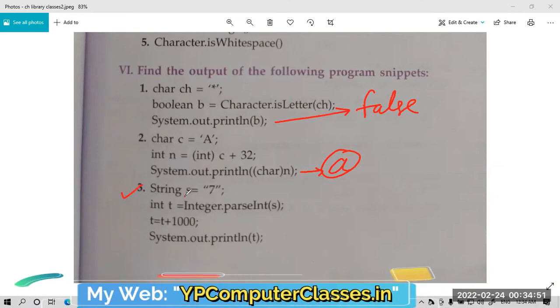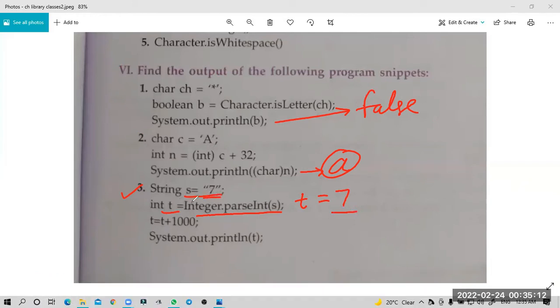Question three: s equals "7" in double quotes, and Integer.parseInt() method converts s into integer. In t you will get 7 but in integer form. With t you can do calculation - t plus 1000 equals 7 plus 1000, so answer will be 1007.